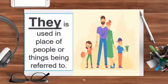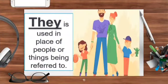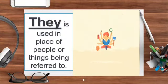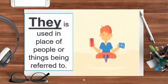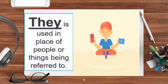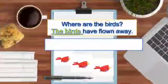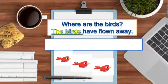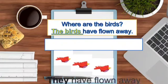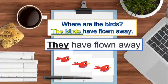Now, next is they. They is used in place of people or things being referred to — when you are talking about more than one person or more than one thing, we will always use they. Let's see an example. Where are the birds? The birds have flown away. Now children, the birds is a plural. As we know, with a plural we will use they. They have flown away.